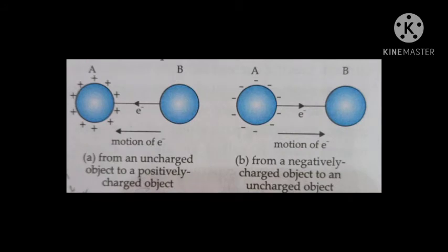Similarly, when two charged objects are considered — a charged object means an object that has an imbalance of charge, either more negative electrons than positive protons or vice versa. A charged object contains either more negative electrons or more positive protons.